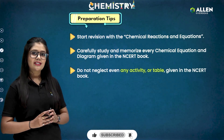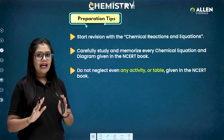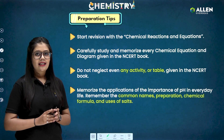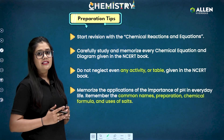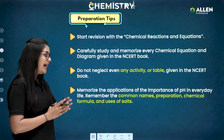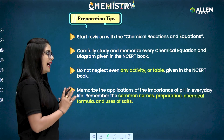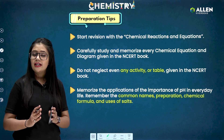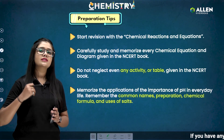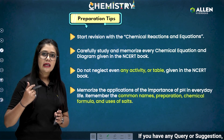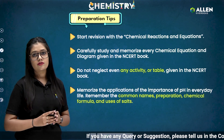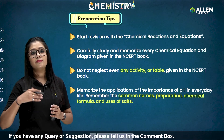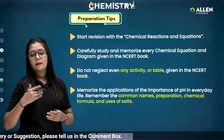Do not neglect any activity or table given in the NCERT book. From the chapter acid bases and salt, memorize the applications and importance of pH in everyday life, and remember the common names, preparation methods, chemical formulas, and uses of different salts such as plaster of Paris, bleaching powder, washing soda, and baking soda.